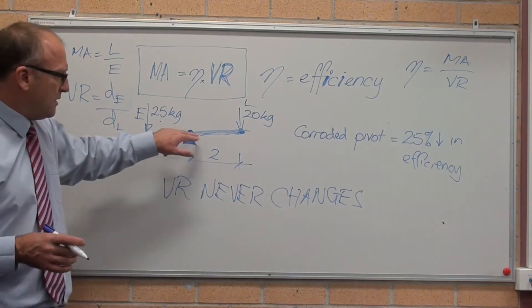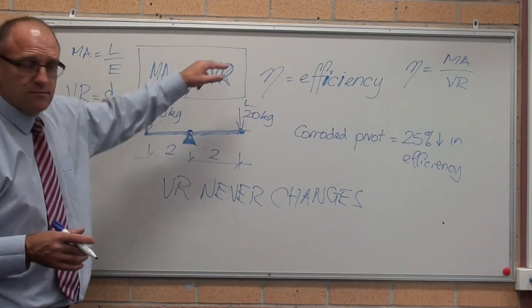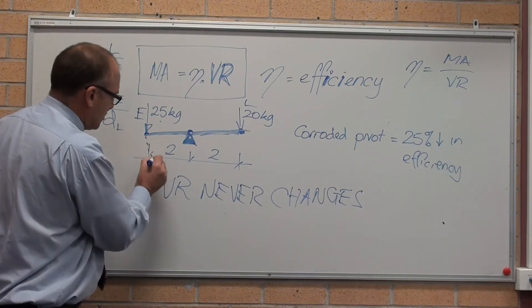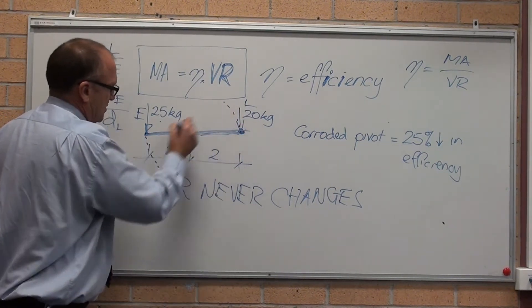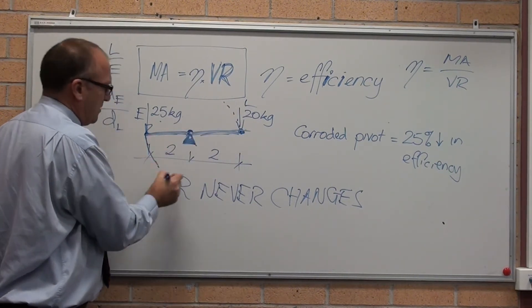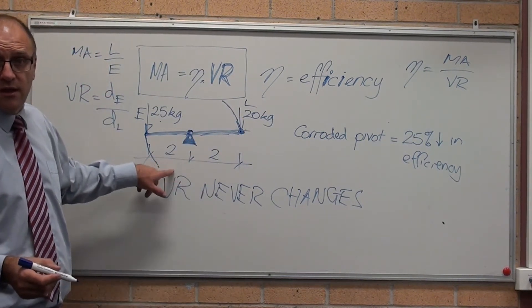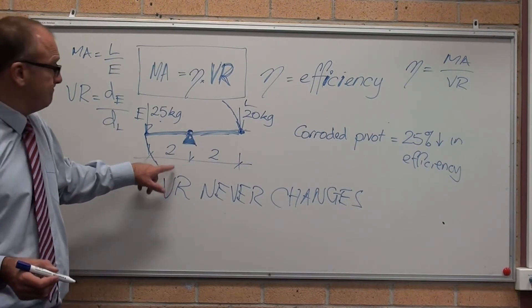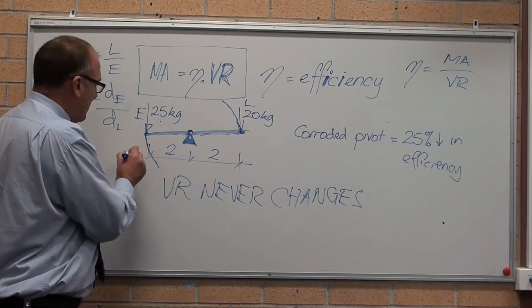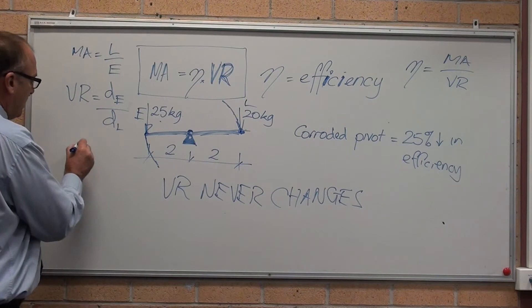If I move that down one metre, this moves up one metre. It actually travels in a circle. So if that travels down one metre in a circle, that travels up one metre in a circle, because they're the same radius. Distance moved by the effort equals distance moved by the load, in this case.